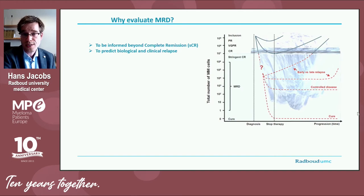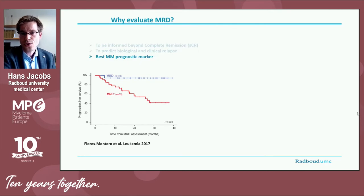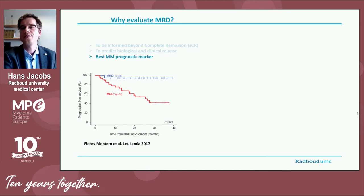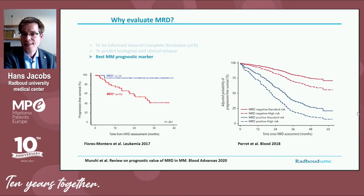MRD status is the best biomarker to predict survival. This better allows prediction of biological and clinical relapses. Numerous studies have shown that myeloma patients who are MRD negative have on average a significantly longer survival compared to patients who test MRD positive. Moreover, MRD status is an independent prognostic marker, meaning you can combine it with traditional prognostic markers such as ISS staging or cytogenetic information to receive even more detailed prognostic information for individual patients.